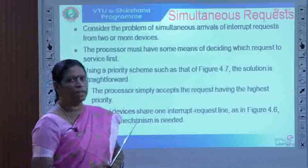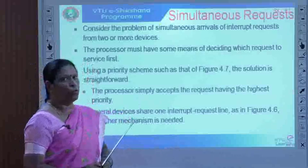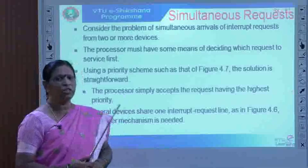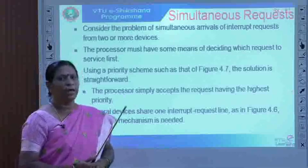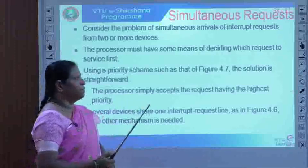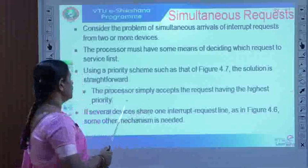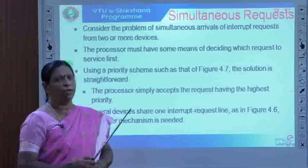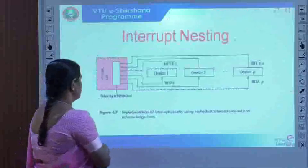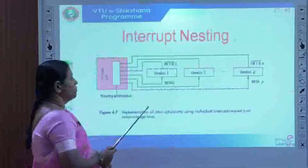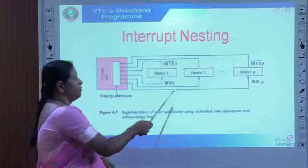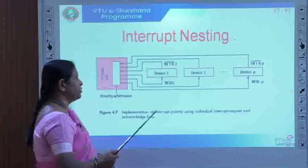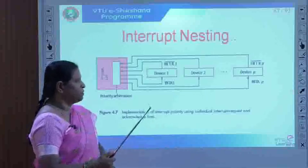Consider the problem of simultaneous arrivals of interrupt requests from two or more devices. The processor must have some means of deciding which requesting IO device should be granted first. Using a priority scheme discussed earlier, it is a straightforward solution — the processor simply accepts the request having the highest priority. Using interrupt priority with multiple request lines, this concept was handled easily.